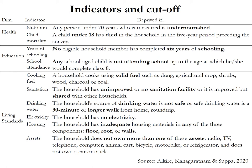Individuals are deprived in school attendance if any school-age child is not attending school up to the age at which they would complete class eight. For example, if a household has three school-age children and one is out of school, every member is considered deprived in school attendance. For health and education indicators, each household member may be identified as deprived based on information from other household members, since certain data like anthropometric data was collected only from selected members.